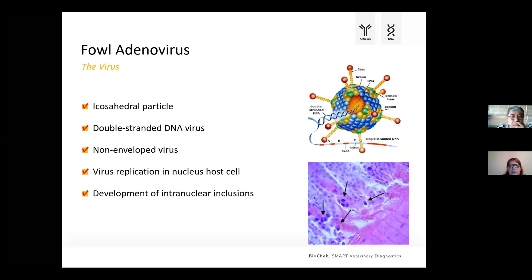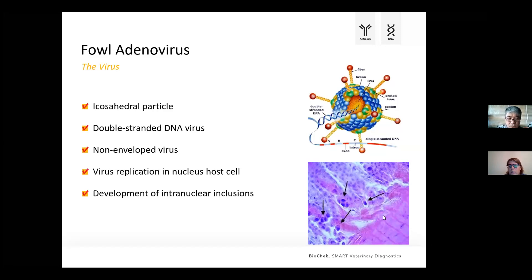Fowl adenovirus is a double-stranded DNA virus. It's also a non-enveloped virus. When it enters host cells, it goes into the nucleus and starts replicating. During this replication, intranuclear inclusion bodies are developed, and this is what we often see on histology sections. If we look at histopathology with fowl adenovirus, we often see these intranuclear inclusion bodies, which can be seen on the picture at the right side below.